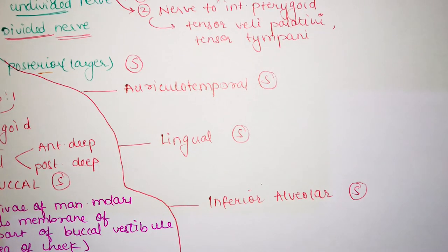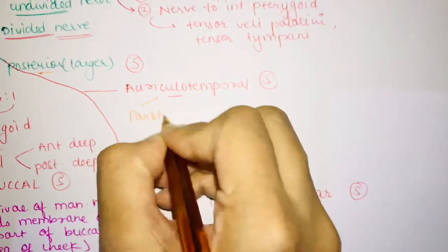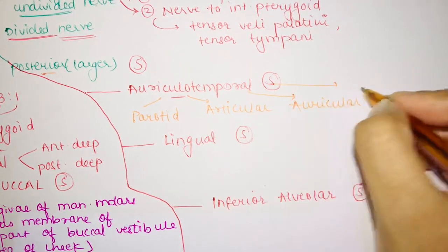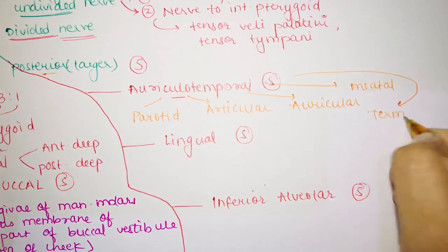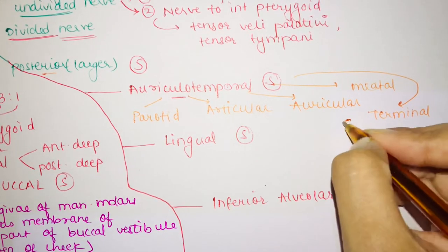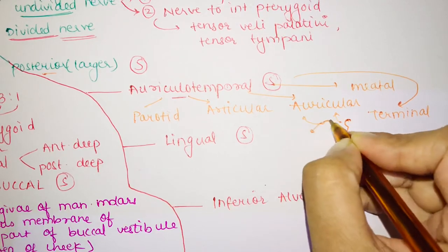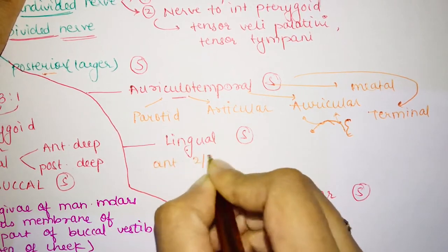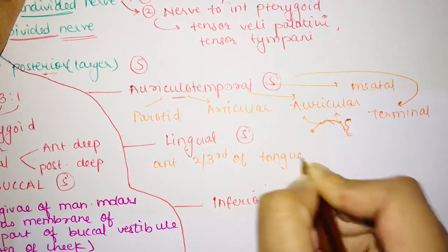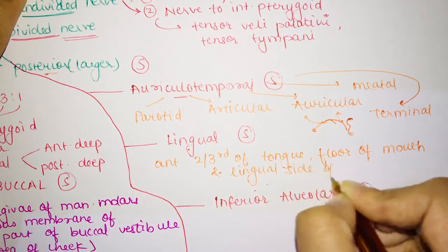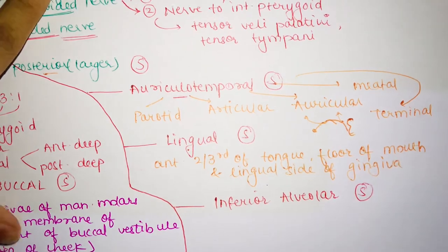The posterior division is the larger one and is mainly sensory. It divides into three branches: auriculotemporal, lingual, and inferior alveolar. The auriculotemporal nerve is further divided into five branches: parotid, articular, auricular, meatal, and terminal. You can remember these as a link — parotid, then the TMJ articulation, then the ear.